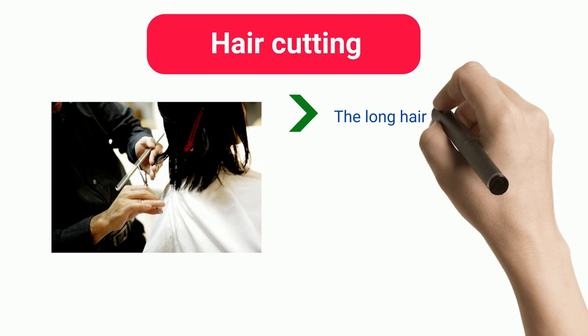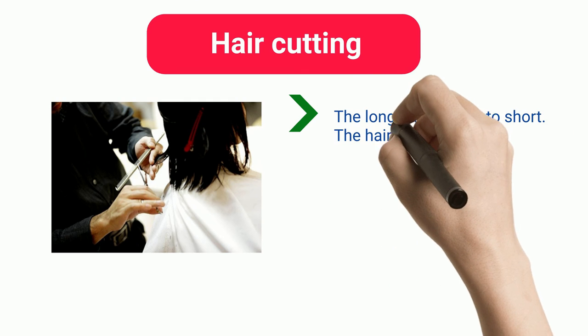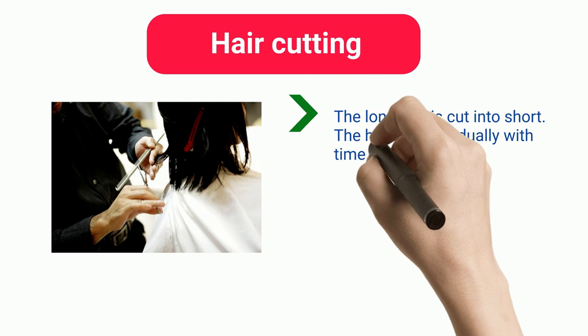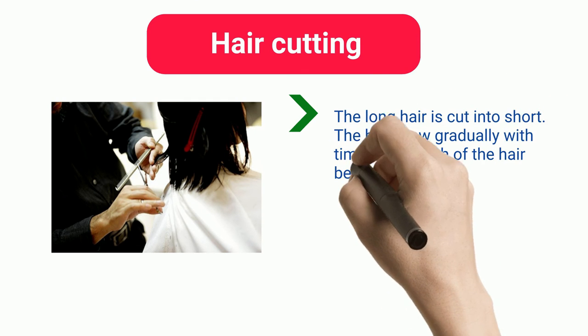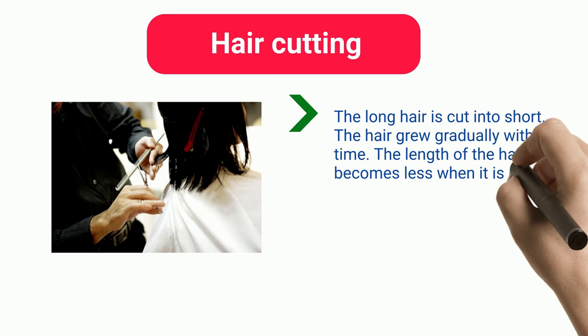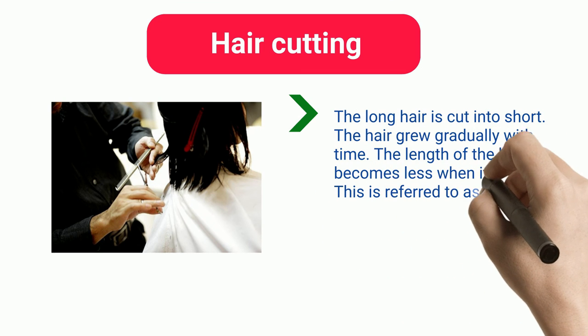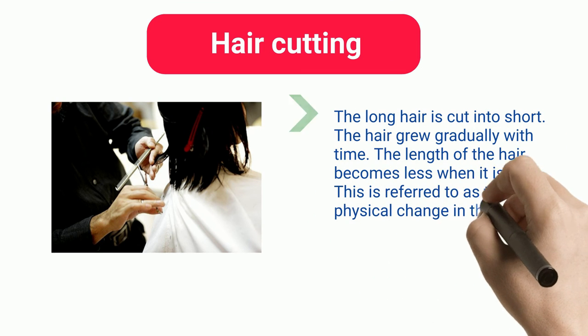Hair cutting: long hair is cut into short hair. The hair grows gradually with time, and the length of the hair becomes less when it is cut. This is referred to as a physical change in the hair.